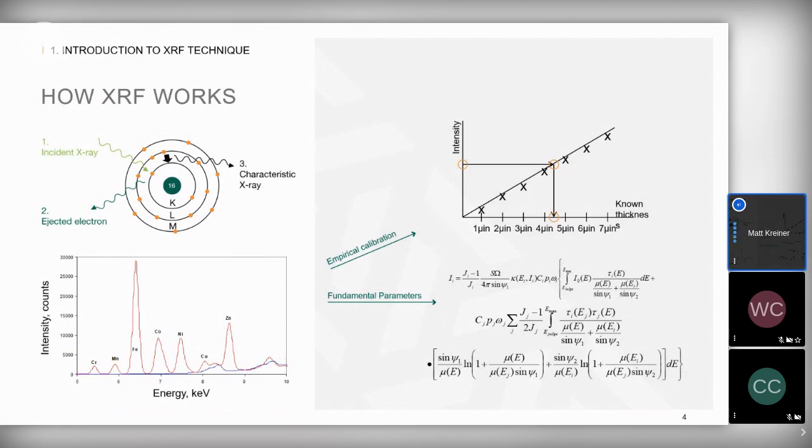The detector's job is to collect the fluorescence x-rays, separate them into discrete energy range buckets and count them. This can be presented to the user as a spectrum, like the image on the bottom left of the screen. This plot shows intensity or number of x-rays counted by the detector as a function of energy. The energy scale tells us which elements are present and the intensity indicates how much of each element is present, either as thickness or as composition. The instrument converts the spectrum into a quantified value using either an empirical calibration derived from measuring standards and plotting a regression, or a mathematical model called fundamental parameters.